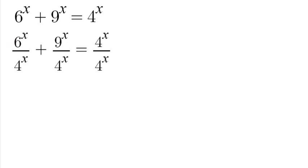Since we have 6 over 4, that can reduce down to 3 over 2. So we have 3 over 2 to the power of x plus 9 over 4 to the power of x is equal to 1.